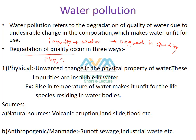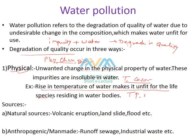The degradation of water quality can be physical, chemical, or biological. Physical degradation refers to changes in properties like color and temperature of the water. A rise in temperature or dullness in color are signs of unwanted impurity accumulation. A rise in water temperature creates unsuitable conditions for species, and some species may lose their lives.